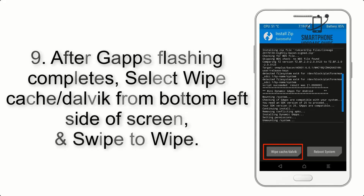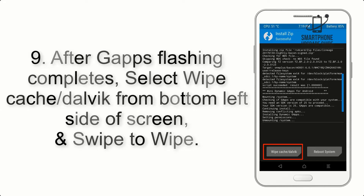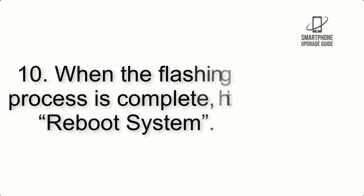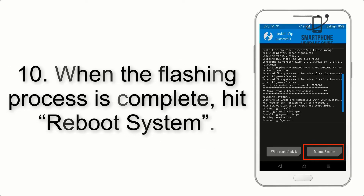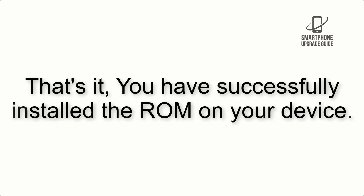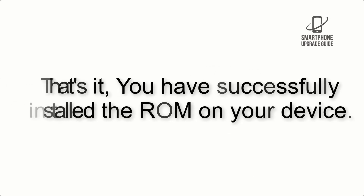Step 8: Flash the GApps zip package in the same manner. Step 9: After GApps flashing completes, select Wipe Cache and Dalvik from the bottom left side of the screen and swipe to wipe. Step 10: When the flashing process is complete, hit Reboot System. That's it — you have successfully installed the ROM on your device.